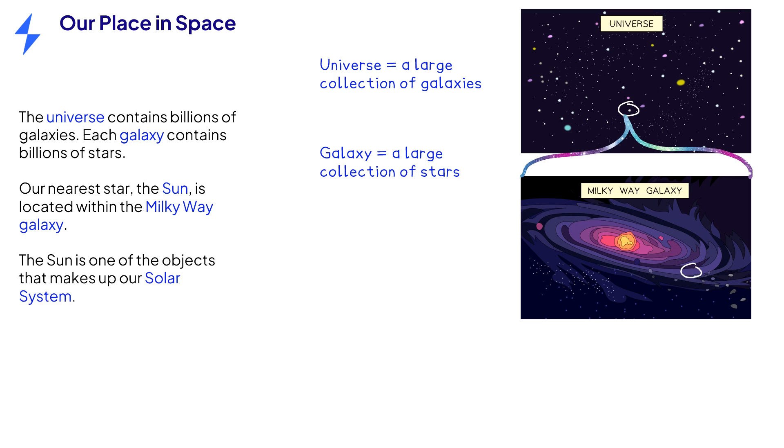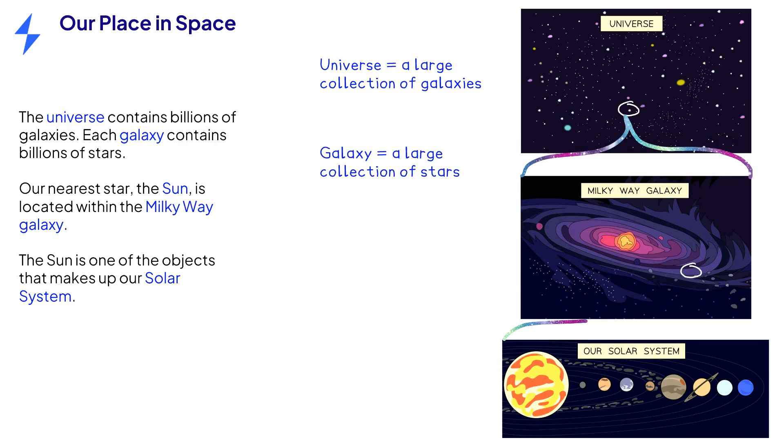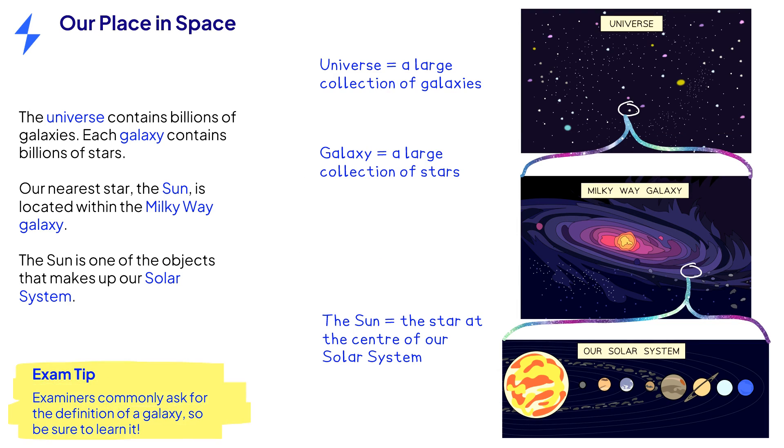The solar system contains many objects, such as the sun and the planets which orbit around it. Our solar system is just one out of potentially billions in the Milky Way. The sun is a star at the centre of our solar system. Make sure you know the difference between the universe, a galaxy and a star.